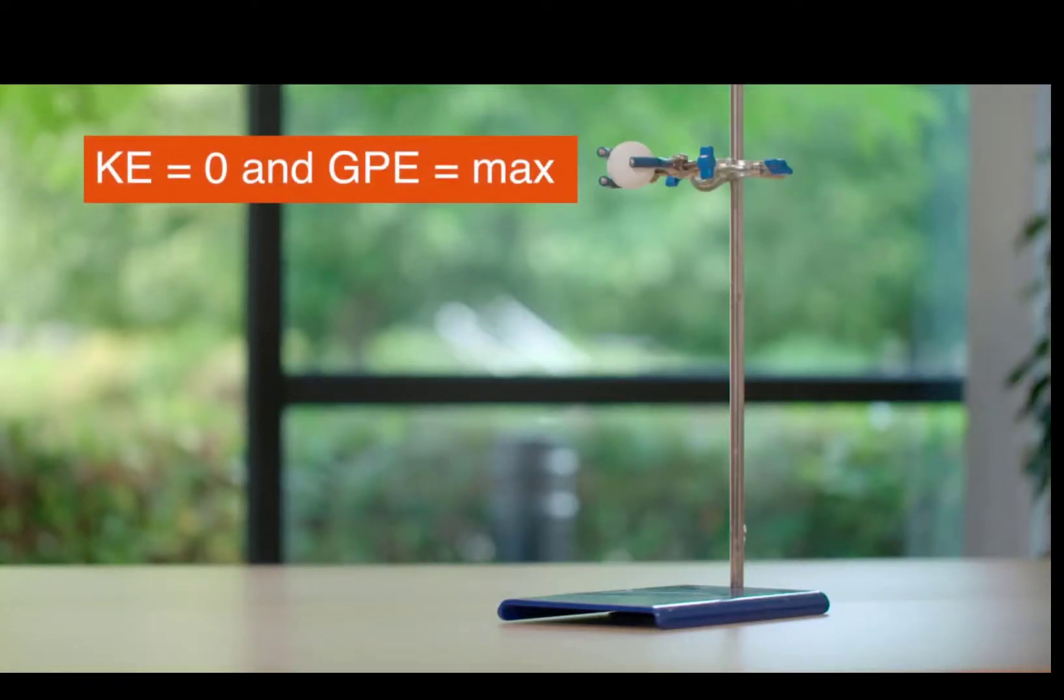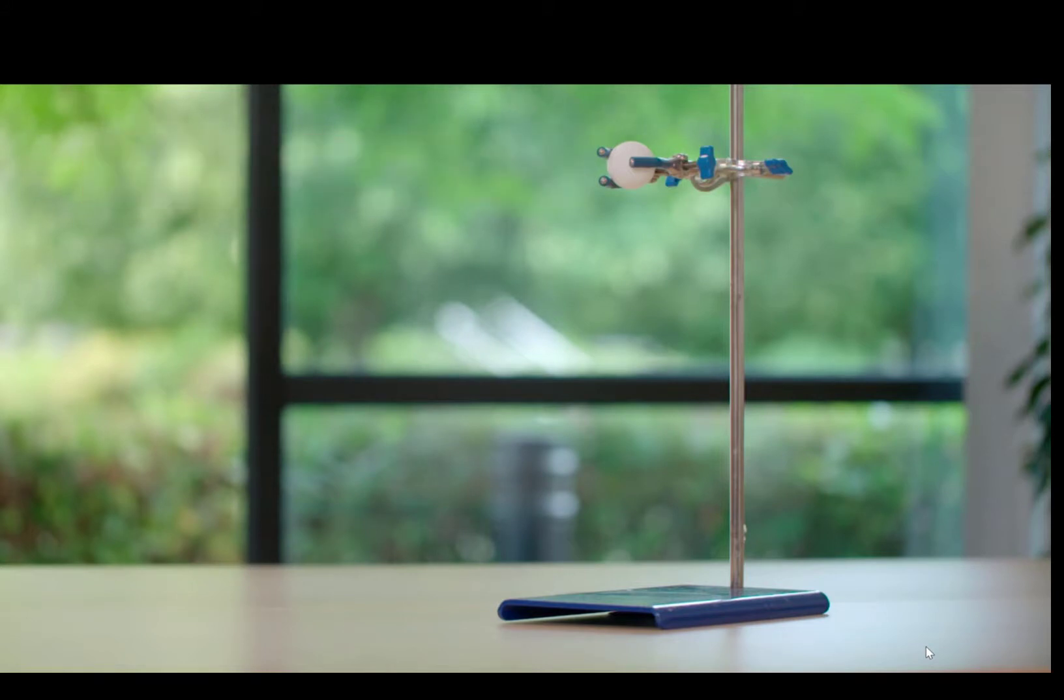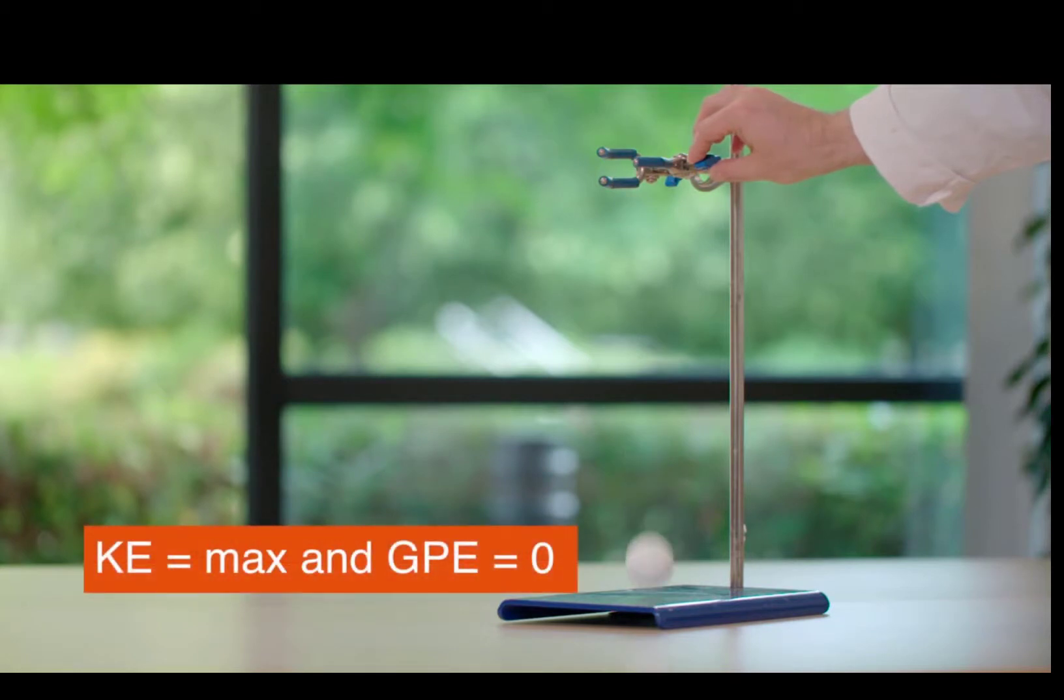The GPE stored by an object is at its maximum at its maximum height, and its KE is zero because it is not moving. When the object falls to its rest, its GPE is at its minimum and has been transferred to its KE, which is then at its maximum.